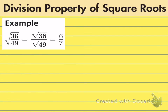Here's one more property — the division property of square roots. Basically, if you have a fraction underneath the radical sign, that is not something you can have at the end of the problem. You are taking your fraction and separating it into the square root of whatever is in the numerator over the square root of whatever is in the denominator. Then you simplify in the usual way. A simple example: the square root of 36 over 49 gives you 6 over 7, since the square root of 36 is 6 and the square root of 49 is 7.